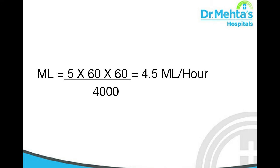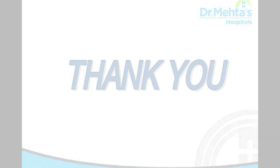ml per hour equals 5 multiplied by 60 multiplied by 60 divided by 4000, equal to 4.5 ml per hour. Thank you.